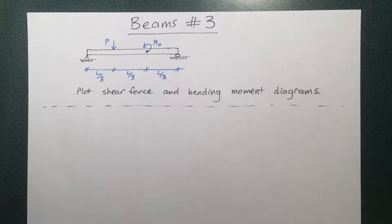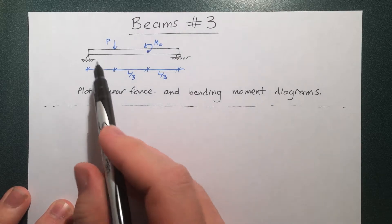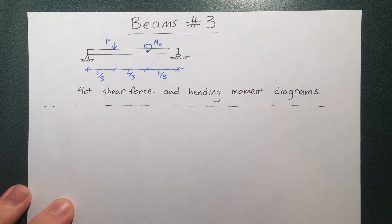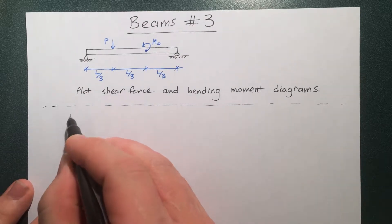So the first step whenever you see a beam problem and you have to plot bending moment diagrams and shear force diagrams is going to be to define the reactions at the supports. So we can do that by making an overall free body diagram.